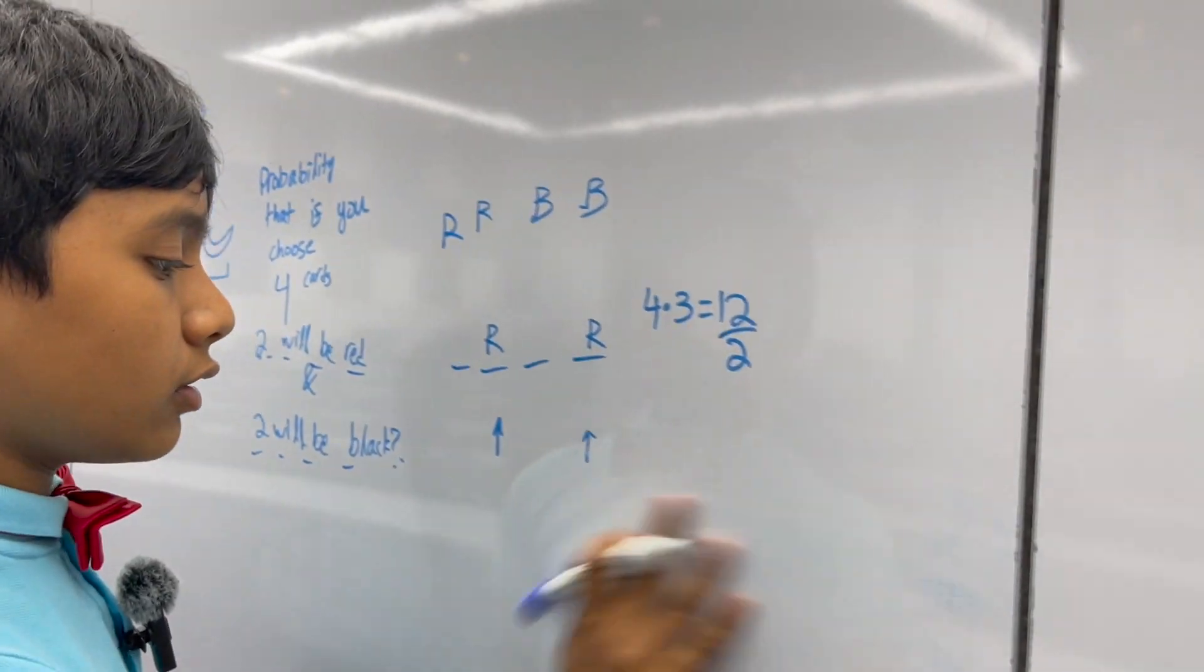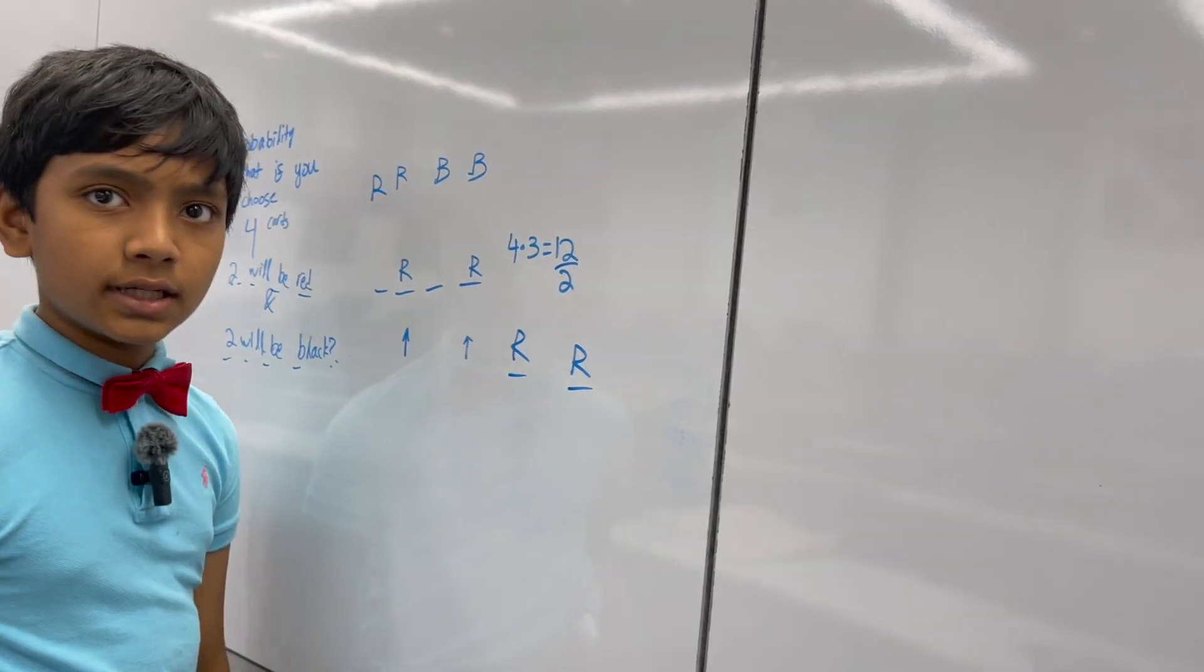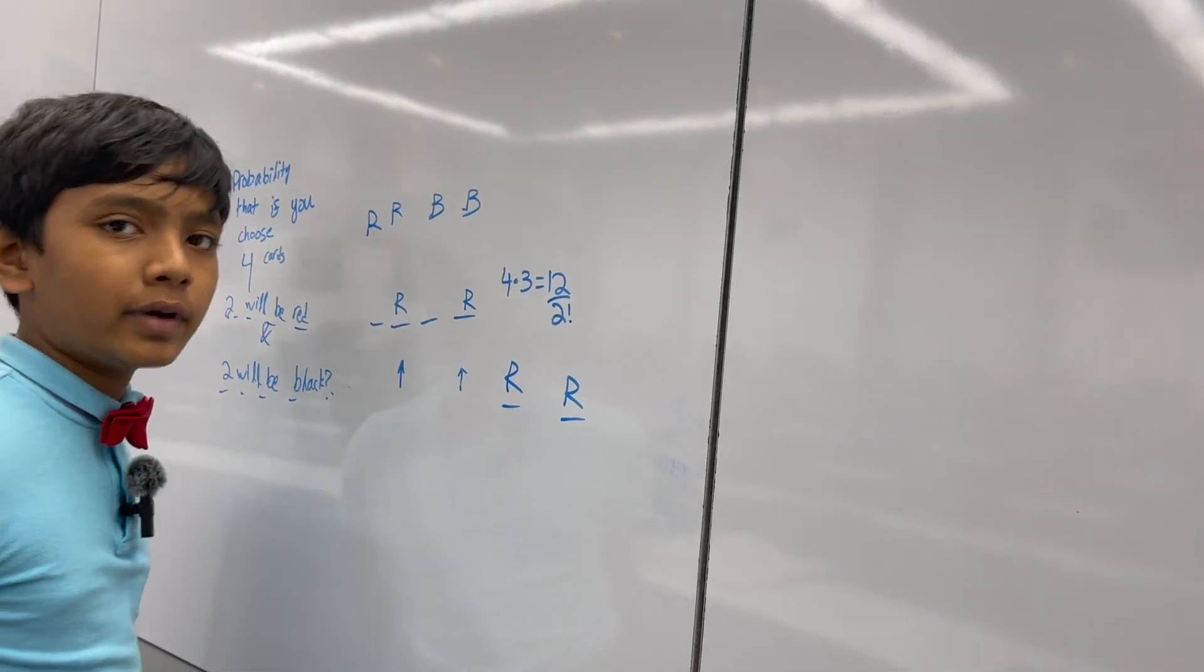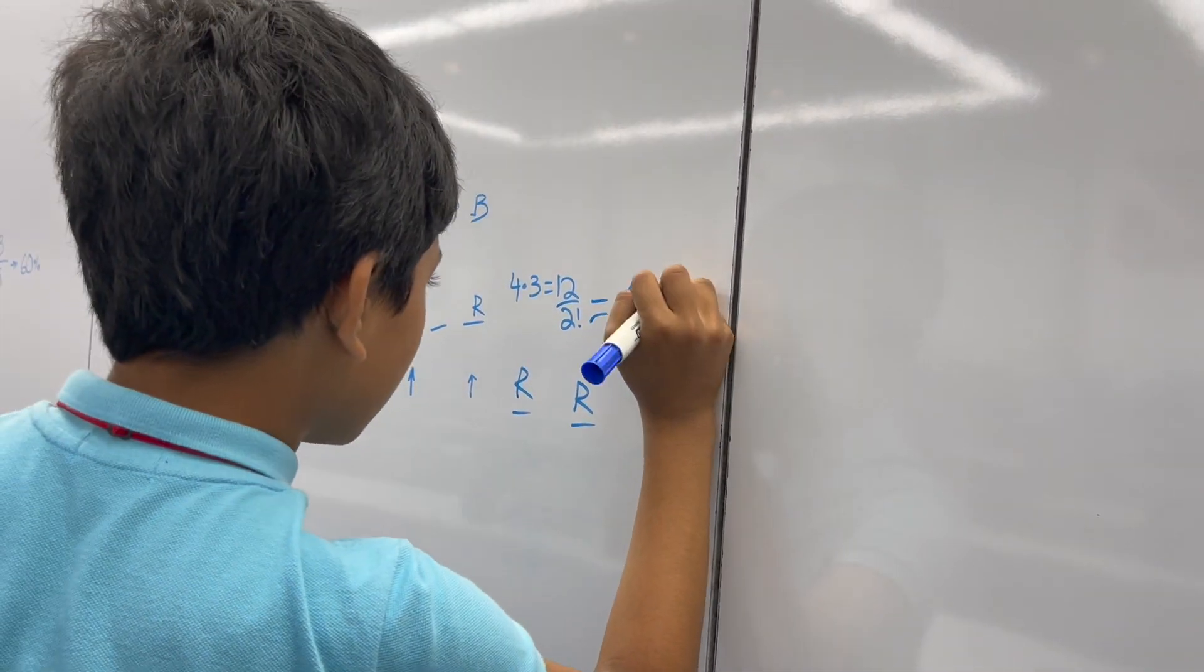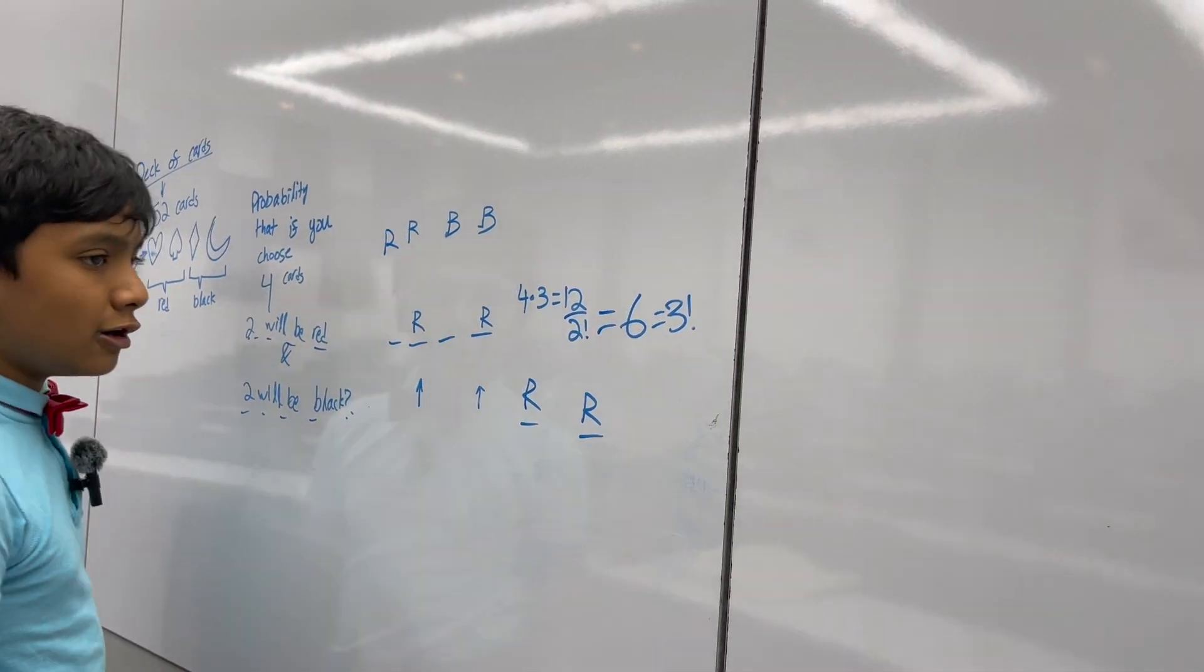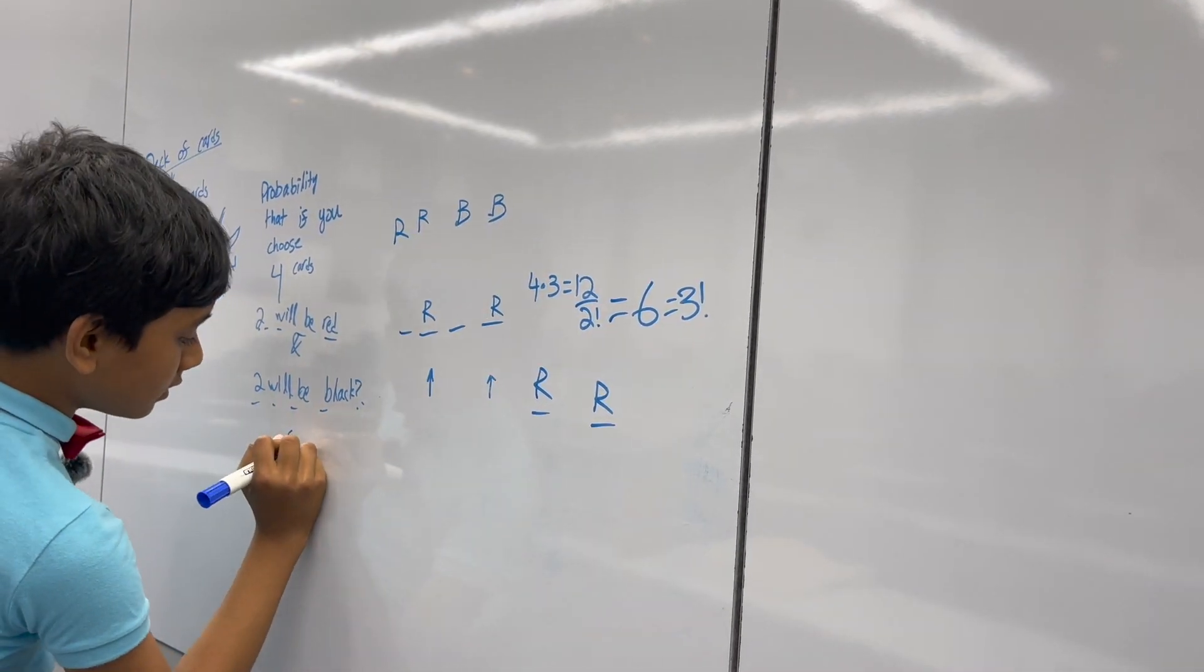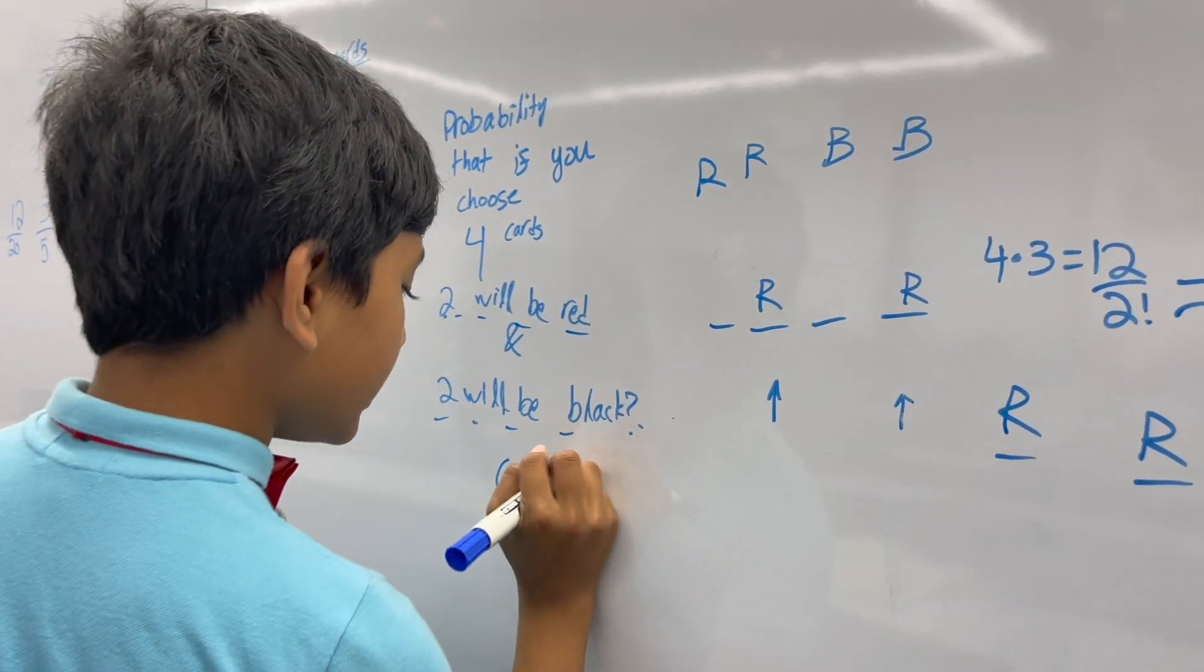So, how many ways are there to arrange two of these fellas in two spots? Well, there are only two factorial ways for two of them. So, that's six, which is coincidentally three factorial. So, six ways to arrange it, times that original probability that you calculated earlier.